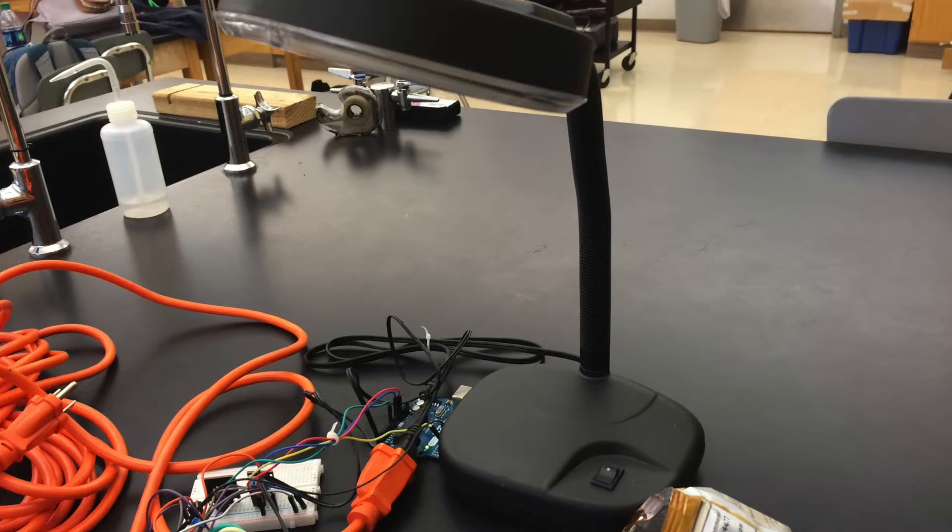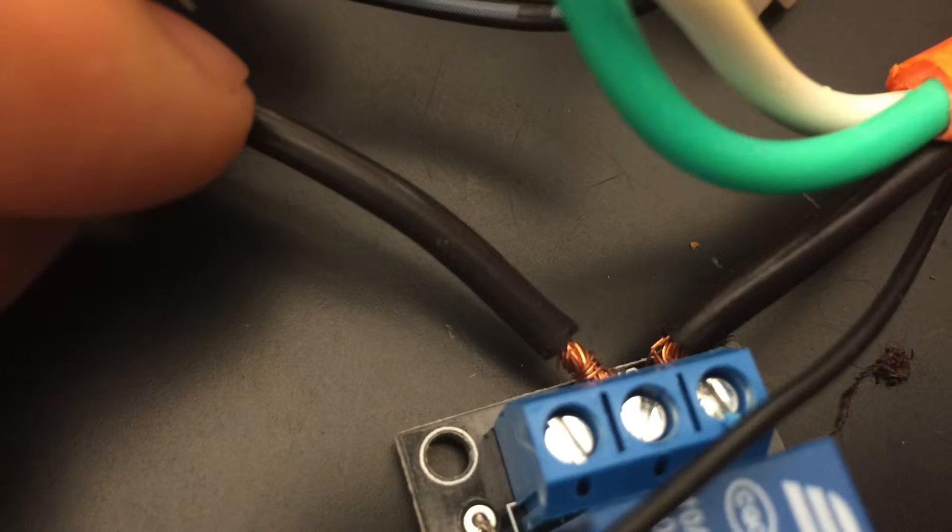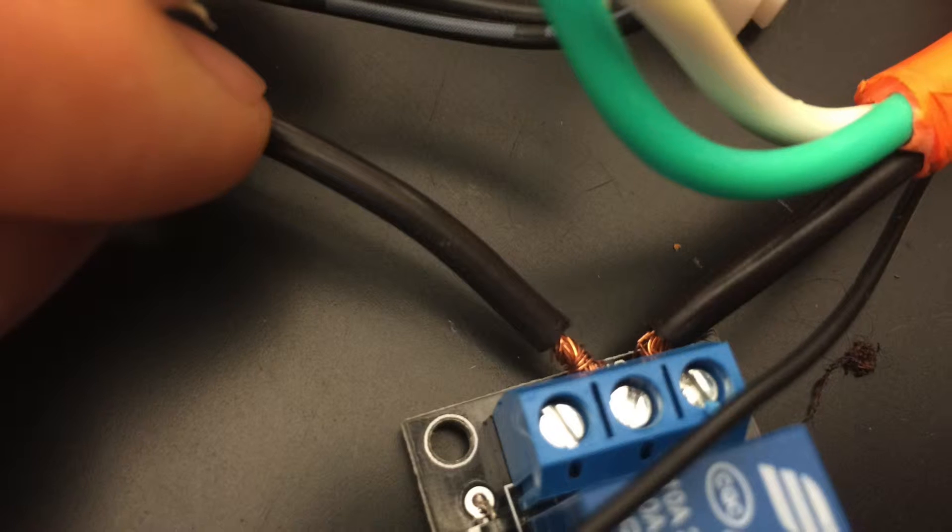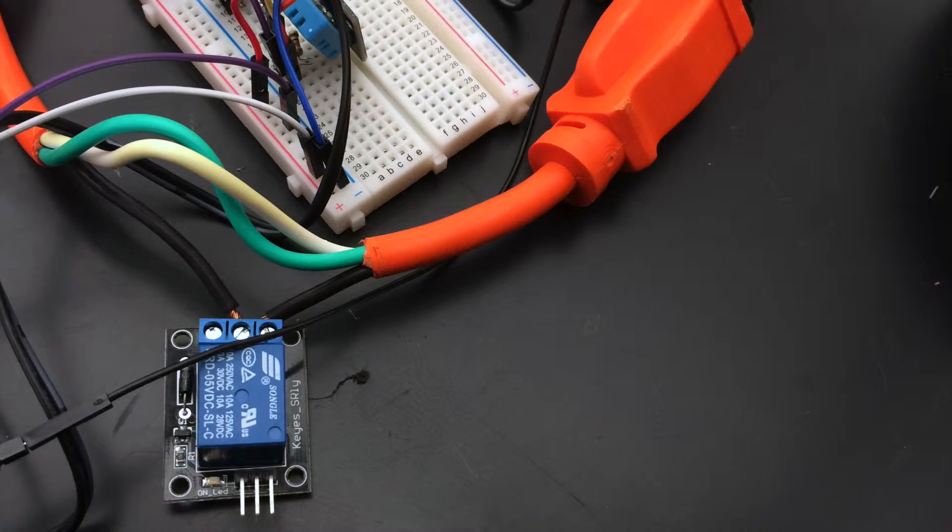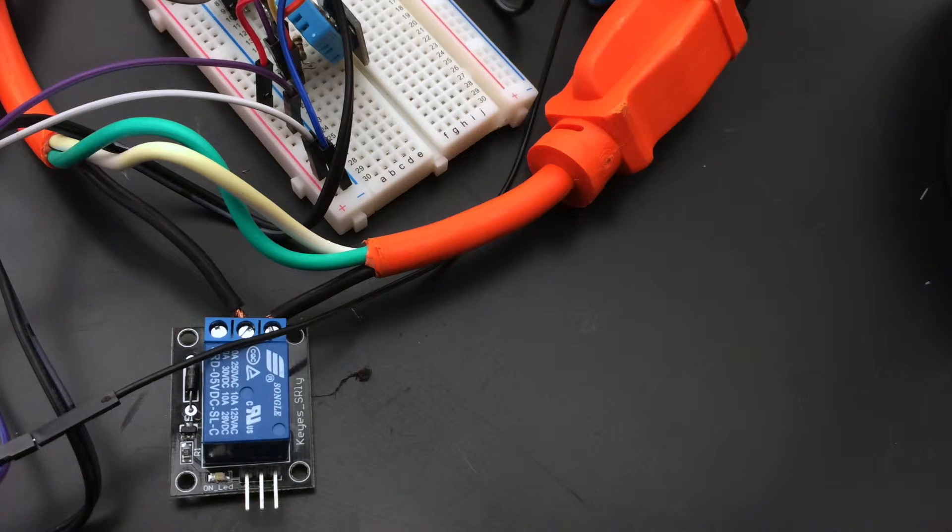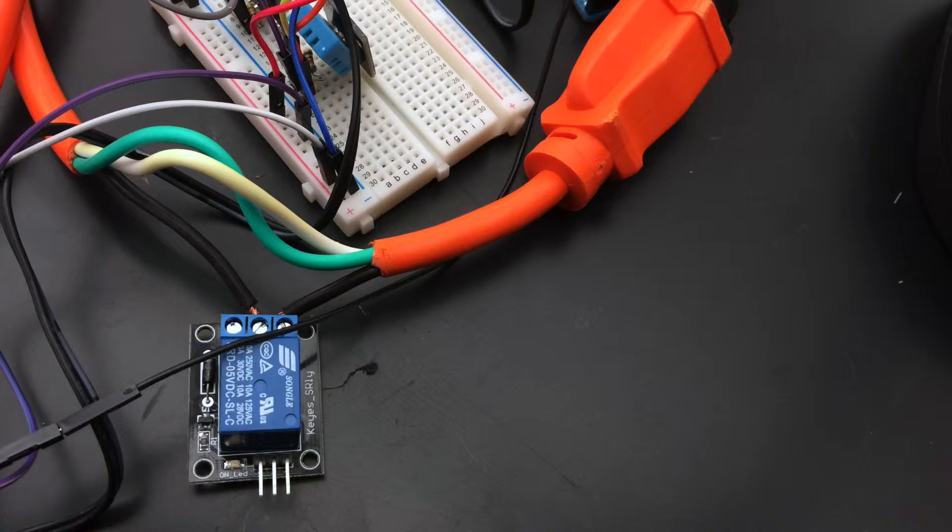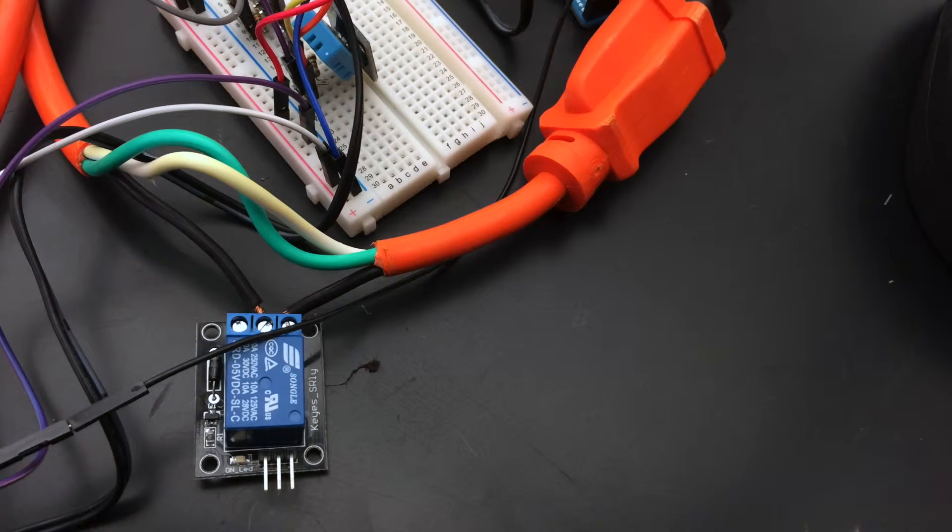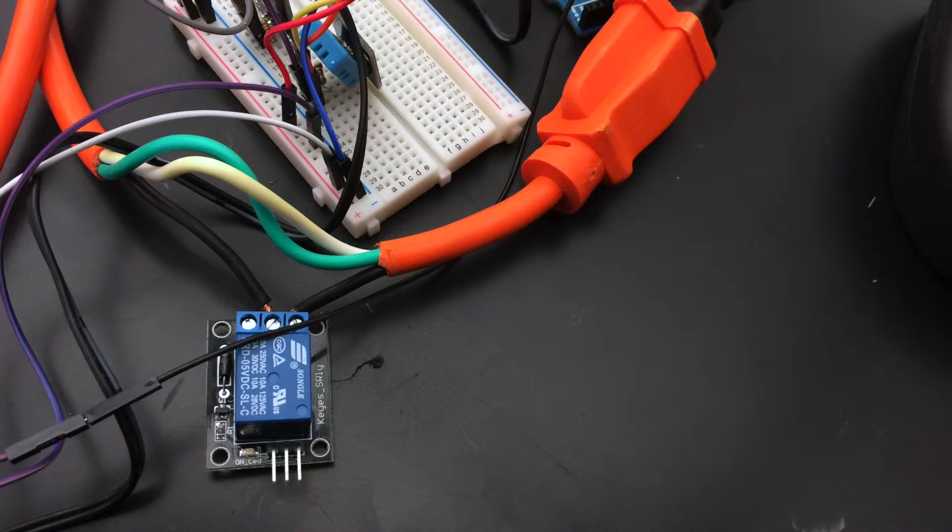Next is the process of splicing the extension cord. Use an X-Acto knife and carefully strip the outer insulation so that you can see the internal wires. Splice the black wire and strip about 1 or 2 centimeters of insulation. Connect the black wire closer to the plug that would go into an outlet into the middle terminal. Connect the other black wire into the normally open terminal. Make sure that you wrap electrical tape around any wire that is not insulated. Now, let's go to the code.